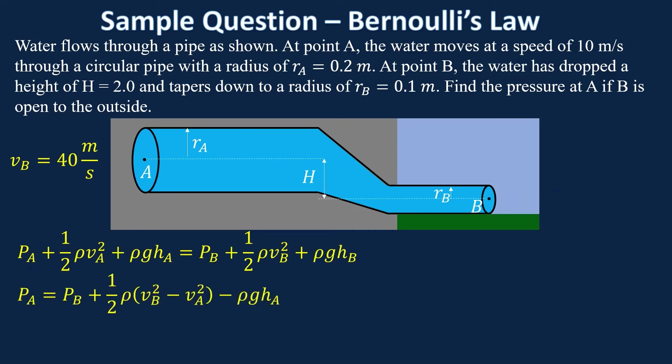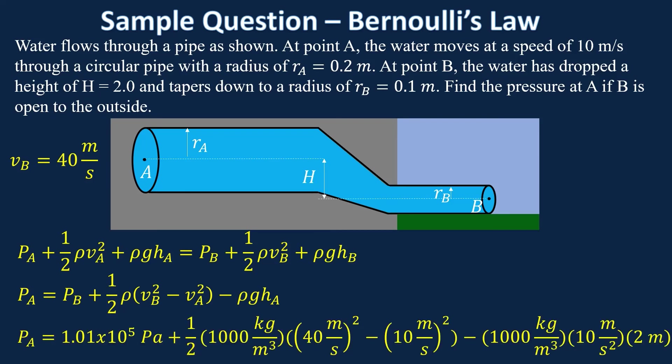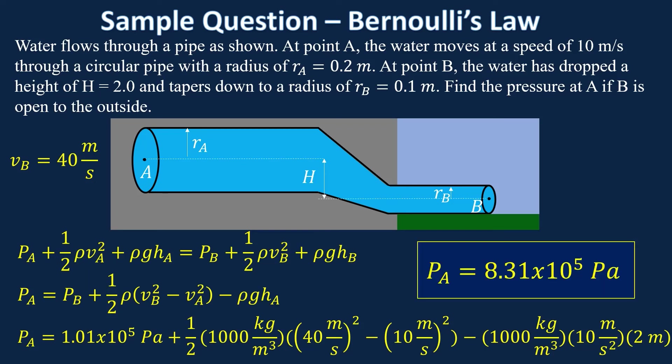That's the expression when you solve it for the pressure at A, with velocities grouped together. Plugging in numbers — it's a lot of number crunching but pretty straightforward — you get the pressure at A is 8.31 times ten to the fifth pascals.